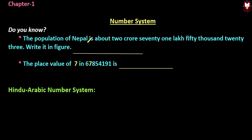Question one: The population of Nepal is about 2,71,50,023 — write it in figures. This is a word problem. We are going to look at the numeric form and how to write the number in figures. We are going to start with 23.